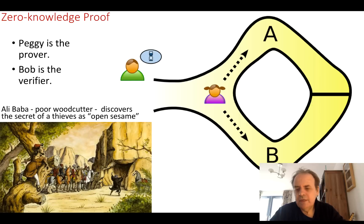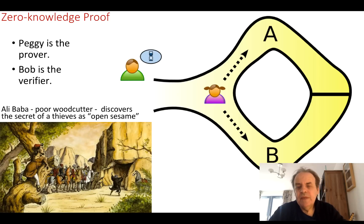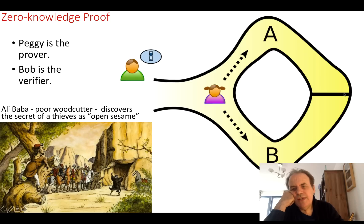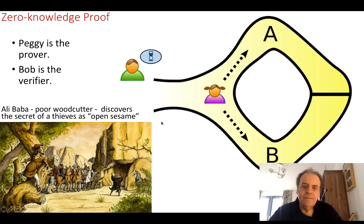As an example of zero knowledge proof, we can look at a scenario where Bob sends Peggy into a cave. The cave has two routes, A and B. What Peggy must prove is that she knows the secret password or passphrase to open up an entrance connecting A and B — a bit like Ali Baba and the 40 Thieves, where Ali Baba discovered the secret phrase 'open sesame' to open the cave.